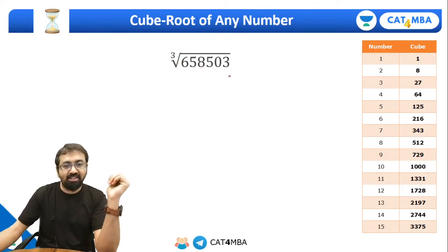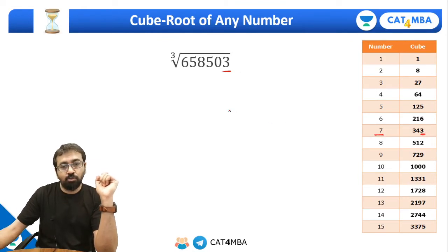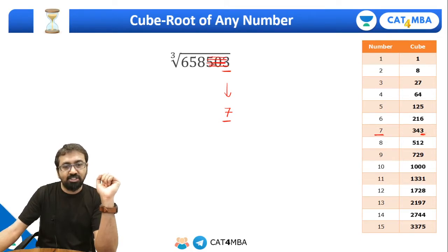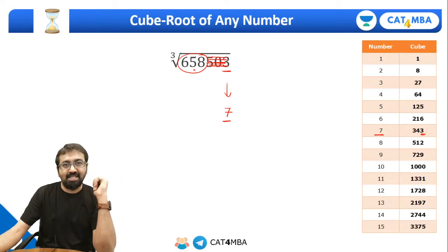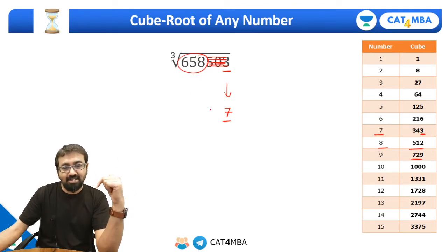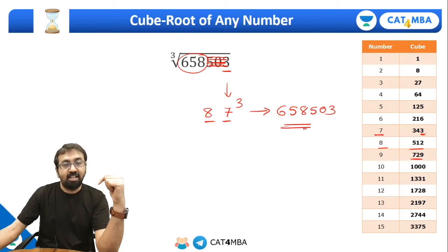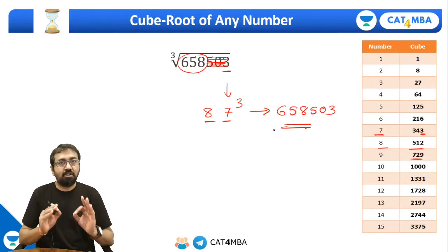Let's take one more example so that this concept becomes very clear. Suppose you have this number — the last digit is three. Which number's cube will have last digit three? Seven, because seven cubed is 343, so the last digit is three. The cube root will have last digit as seven. Strike off the last three digits and look at the remaining number: 658. Which number's cube is less than 658? Eight cubed is 512 and that is less than 658, because nine cubed is 729, which is more than 658. So the digit should be eight — 87 cubed is 658503.